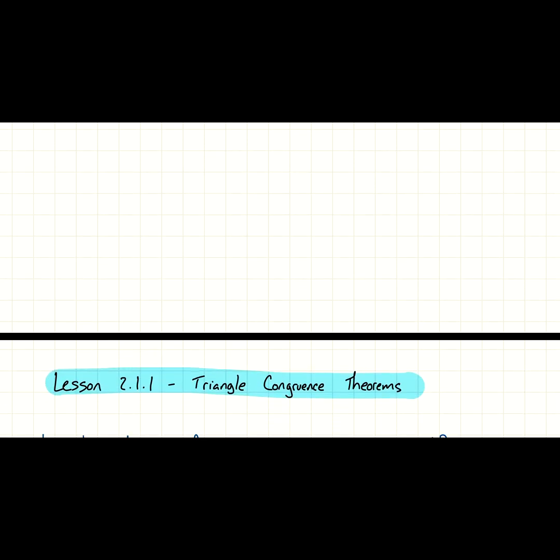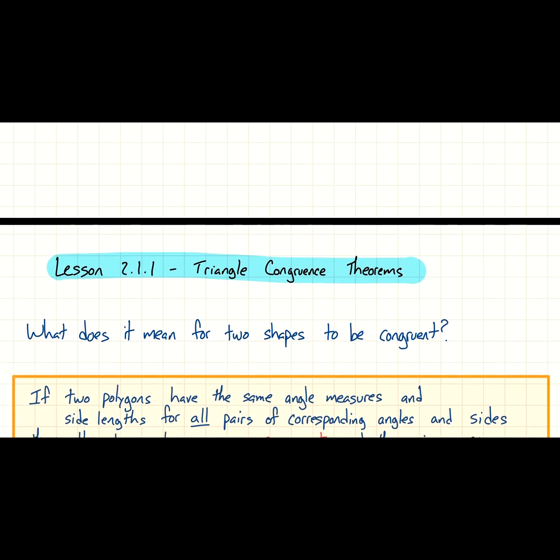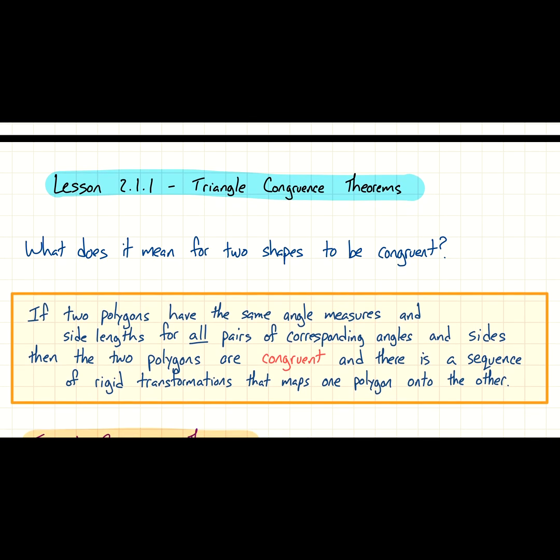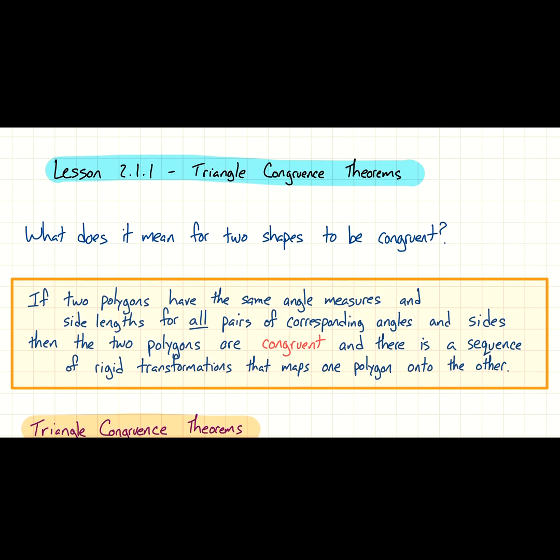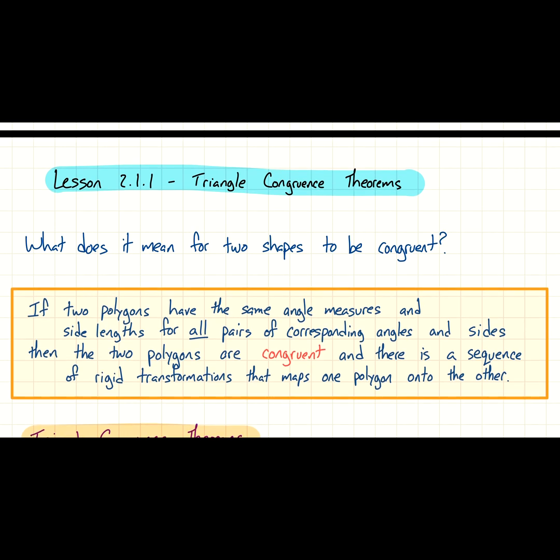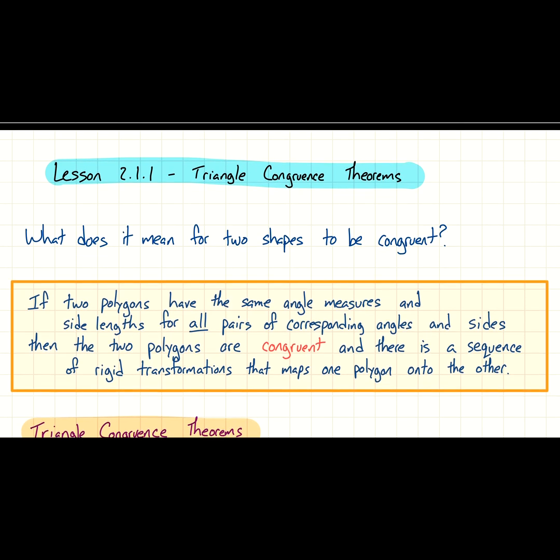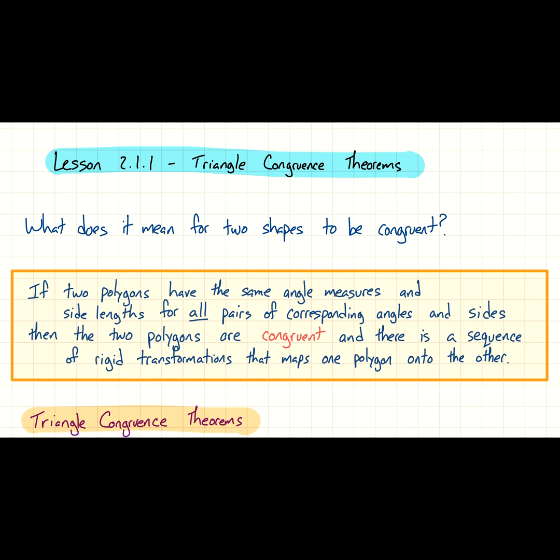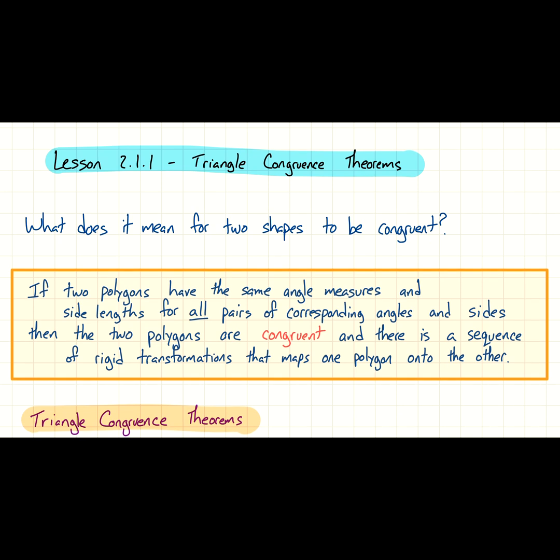In this lesson we review some congruence theorems that you should already know from a previous course. This tries to answer the question: what does it mean for two shapes to be congruent? We've used the word congruent in the last chapter, and in general congruent means same measurements.